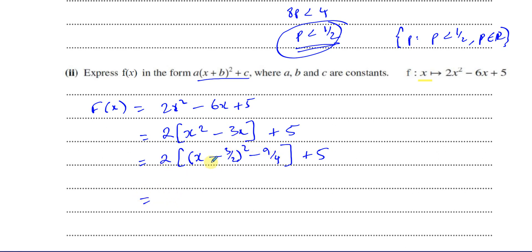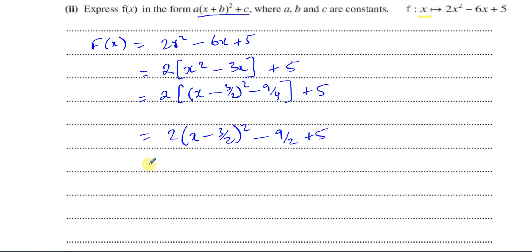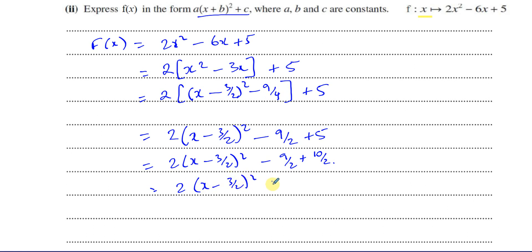Now distributing the 2 without expanding the squared bracket: 2(x − 3/2)² + 2 × (−9/4) + 5 = 2(x − 3/2)² − 9/2 + 5. Since 5 = 10/2, we get −9/2 + 10/2 = +1/2. So f(x) = 2(x − 3/2)² + 1/2. That completes the square.